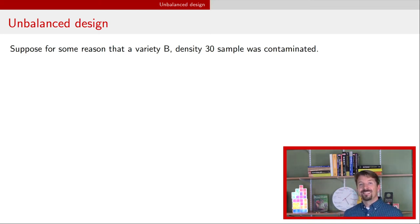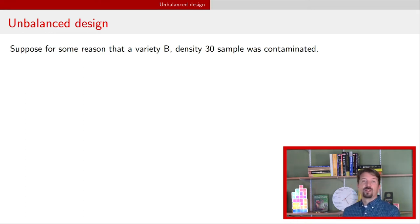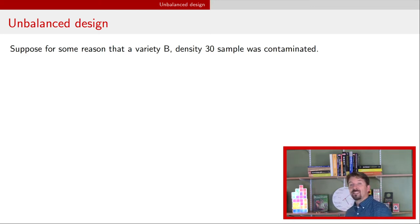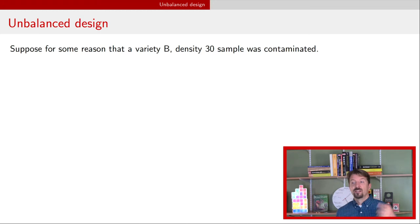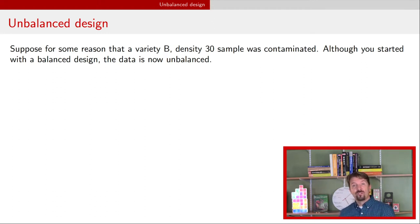Suppose that in the design we talked about before — the experiment where we had variety and density for tomato plants — we have a whole set of plots and randomly determined each treatment-density combination. It turns out that as you collect your samples, one sample for yield got contaminated. So you're down one observation for variety B and density 30. You started with a balanced design but the data you've actually collected is unbalanced.